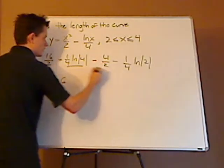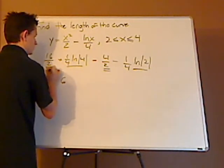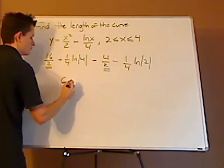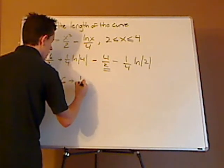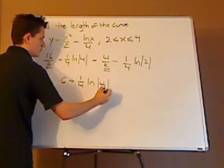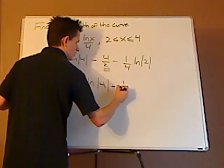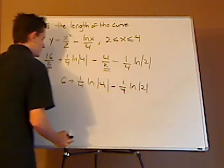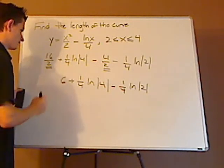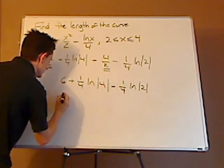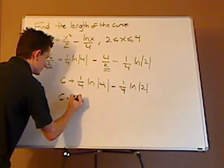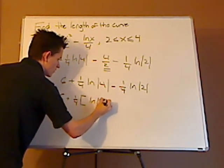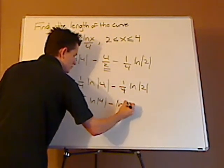Then these right here, since they're unlike terms, the only things that are like are the constants. Then I'm just going to drop these down. So this is plus 1 fourth natural log of 4 minus 1 fourth natural log of 2. Actually, using properties of logarithmic functions, I can take this and simplify it. So this is 6 plus 1 fourth, and what I'm going to do is I'm going to factor. So that's natural log of 4 minus natural log of 2.